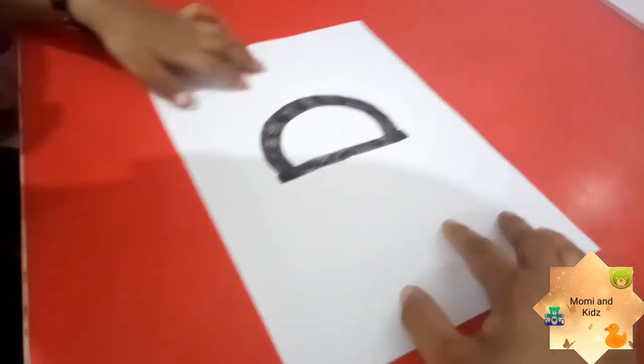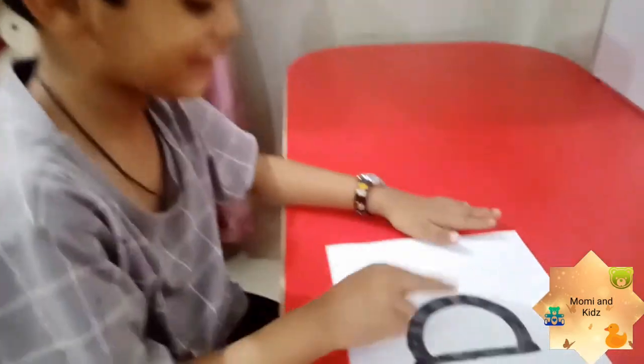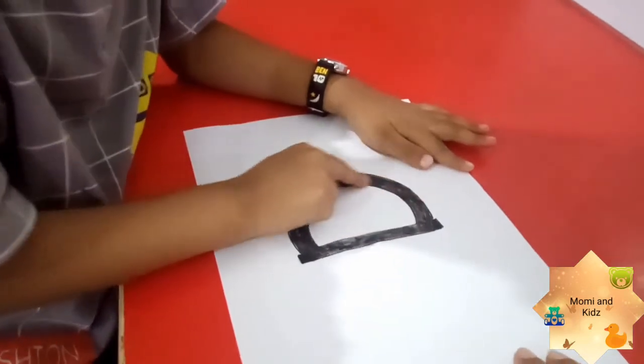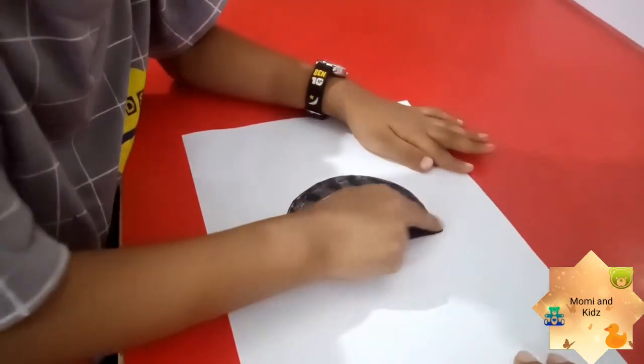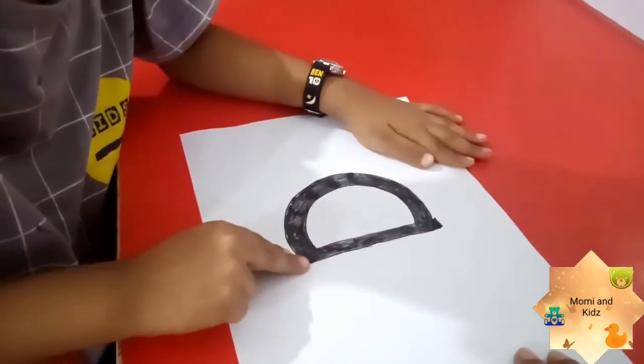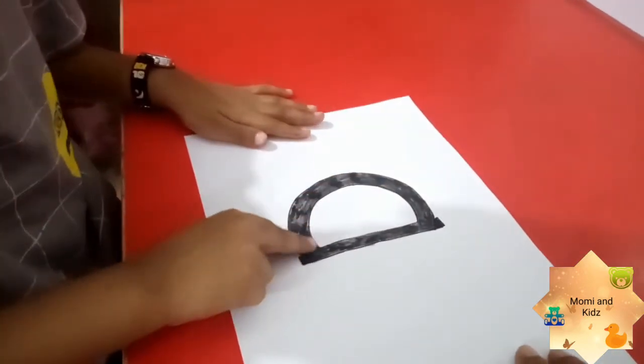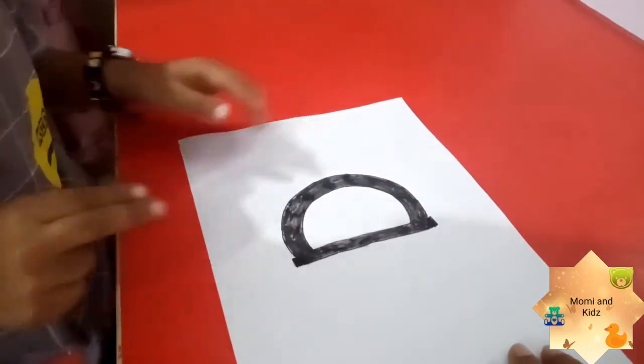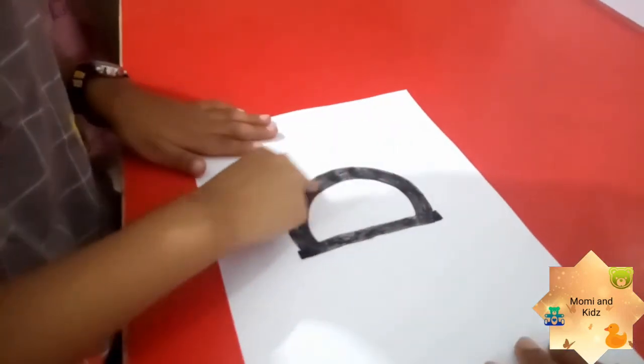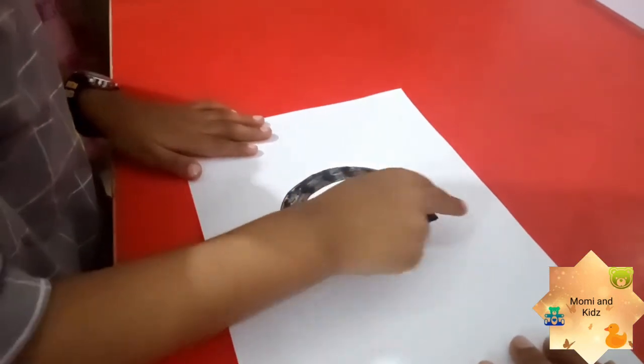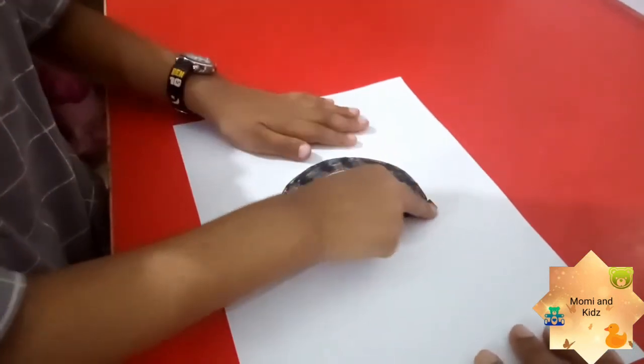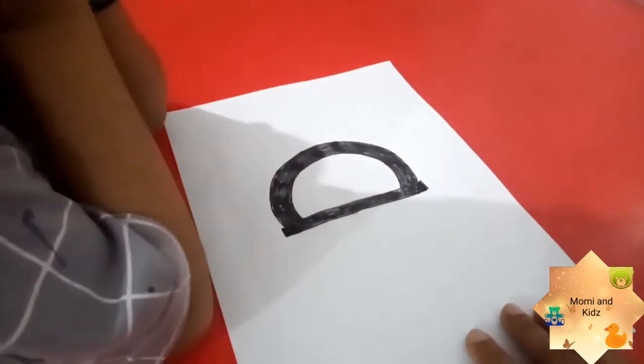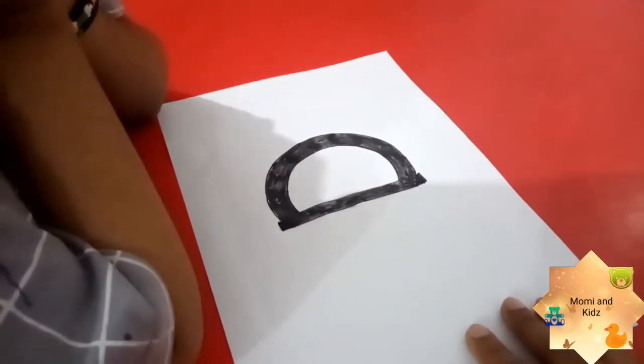So he or she will be able to recognize the sound A and also learn to write the sound A. So Rohan, tell me what is the sound A? Okay, now take two fingers and trace the sound A. Make a curve, then go up, then down. Make a curve, go up, and down. Make a curve, then go up, then down.